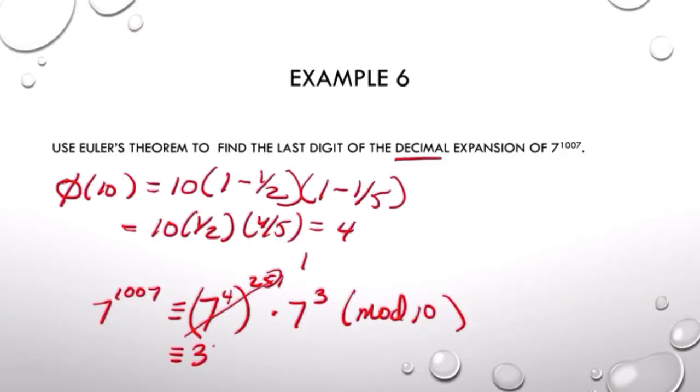7 cubed is 343. We reduce that mod 10 and we get 3. So 3 is the last digit in the decimal expansion of 7 to the 1007th. I hope that helps and you have a great day.